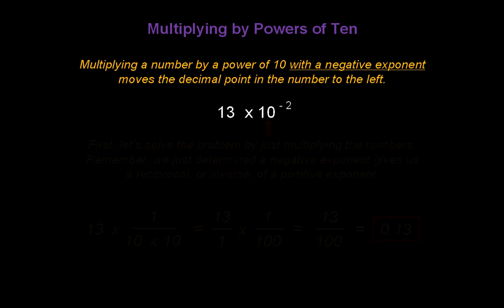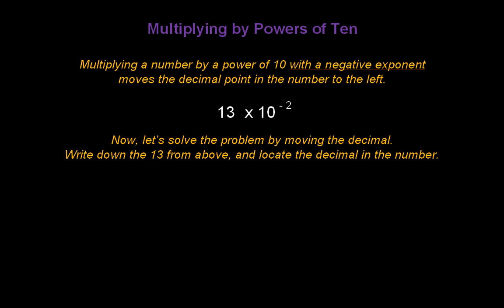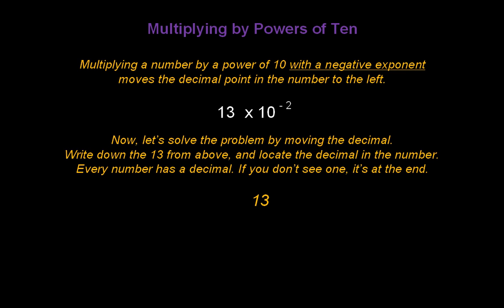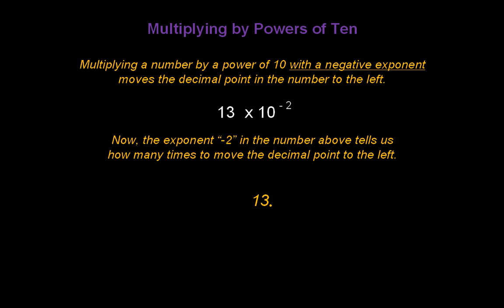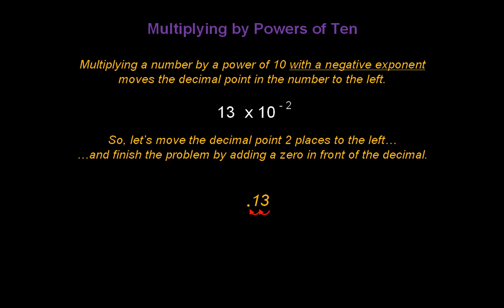Now let's see if we get the same answer by moving the decimal point. Write down the 13 from above and locate the decimal in the number. Every number has a decimal — if you don't see one, place one at the end of the number. The exponent negative 2 tells us how many times to move the decimal point to the left. So move the decimal two places to the left: one, two. Finish the problem by adding a zero in front of the decimal. The answer is the same: 0.13.